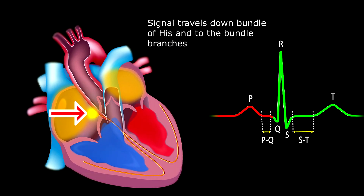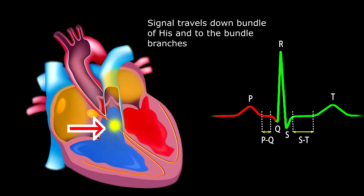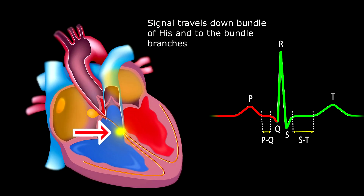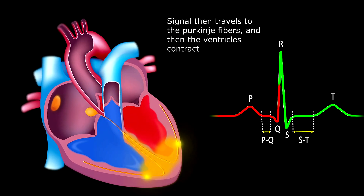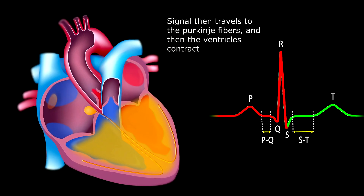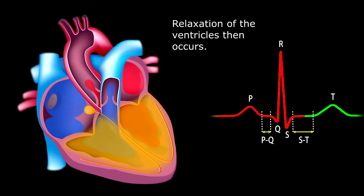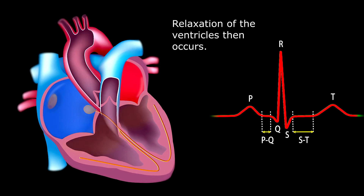Then it's time for ventricular depolarization. So the signal travels down through the bundle of His to the bundle branches and then the Purkinje fibers, causing ventricular contraction followed by the relaxation of the ventricles.